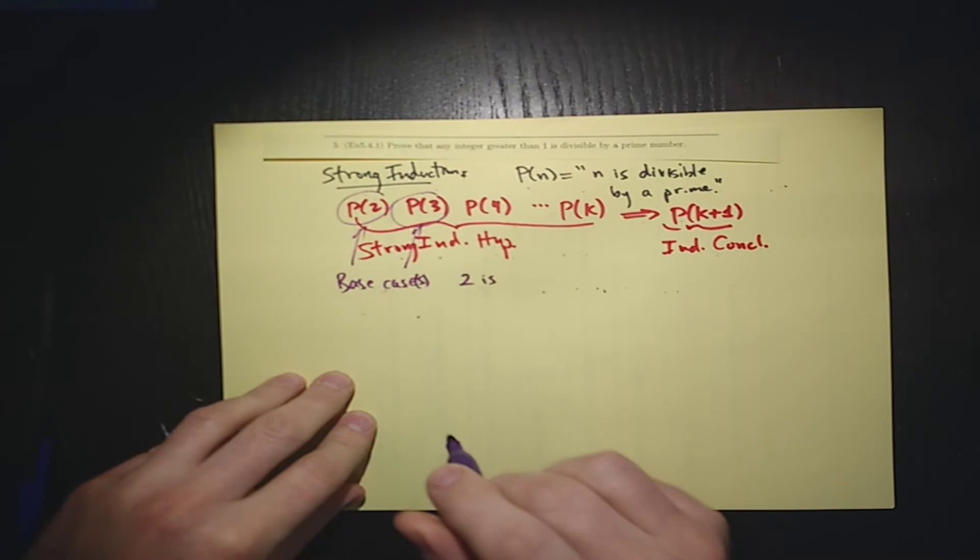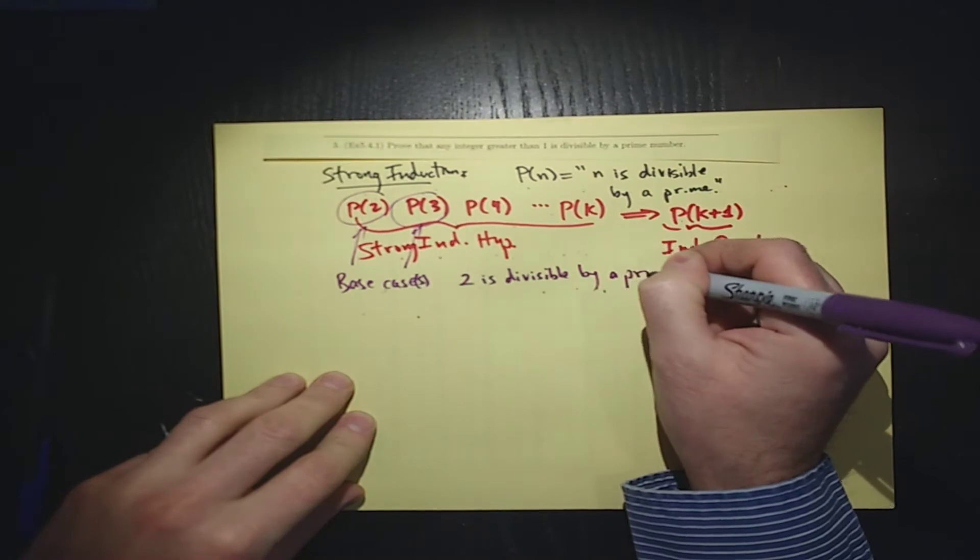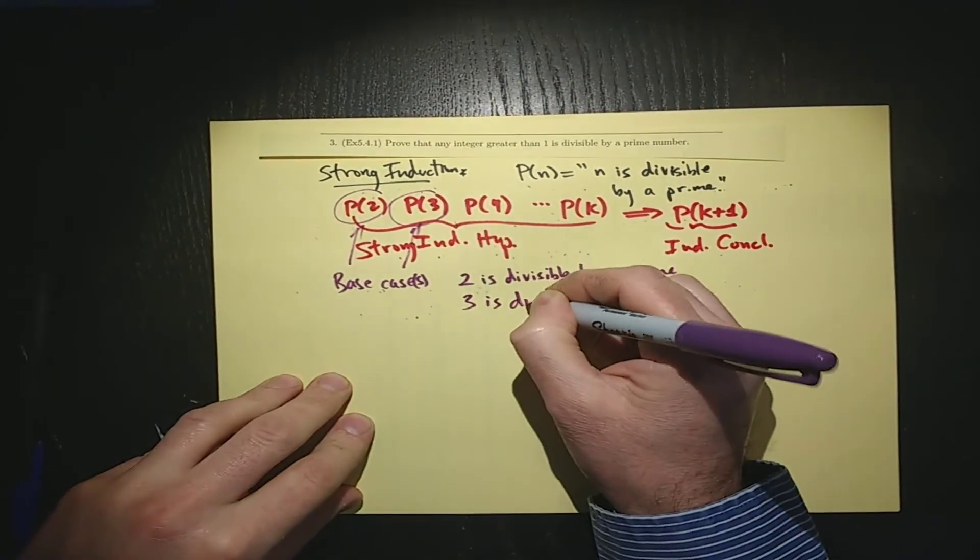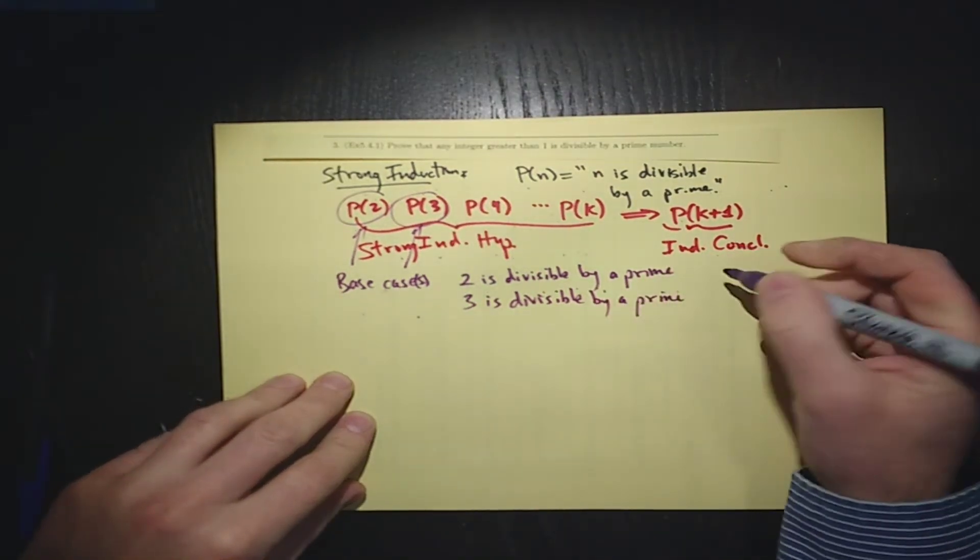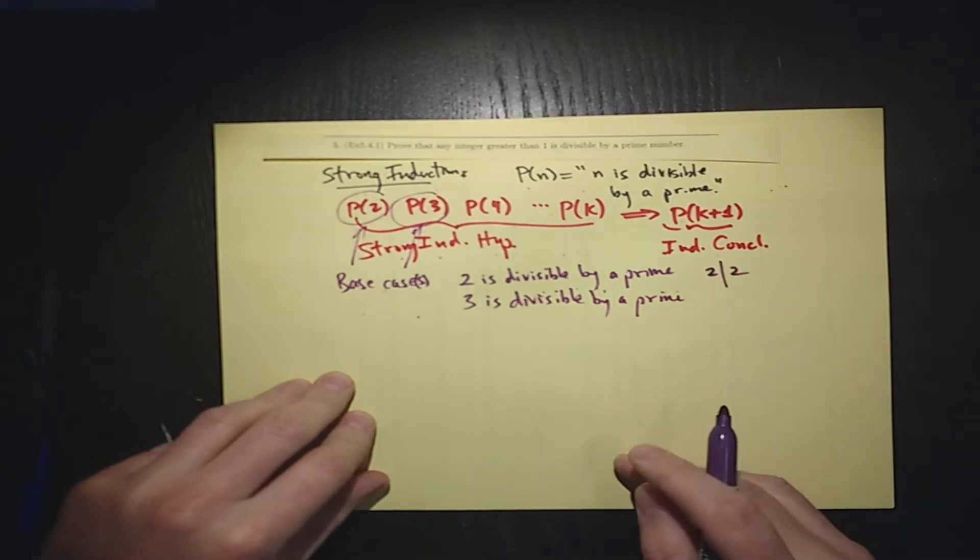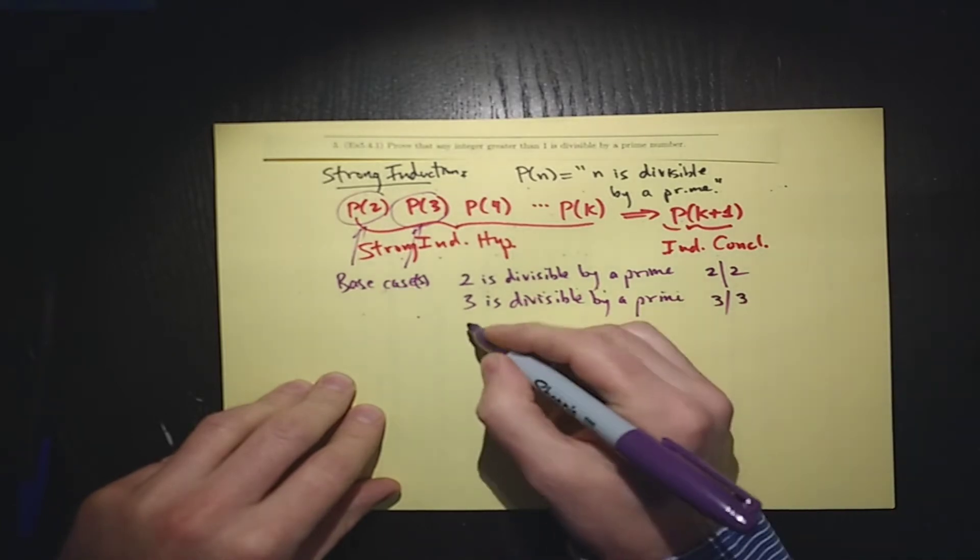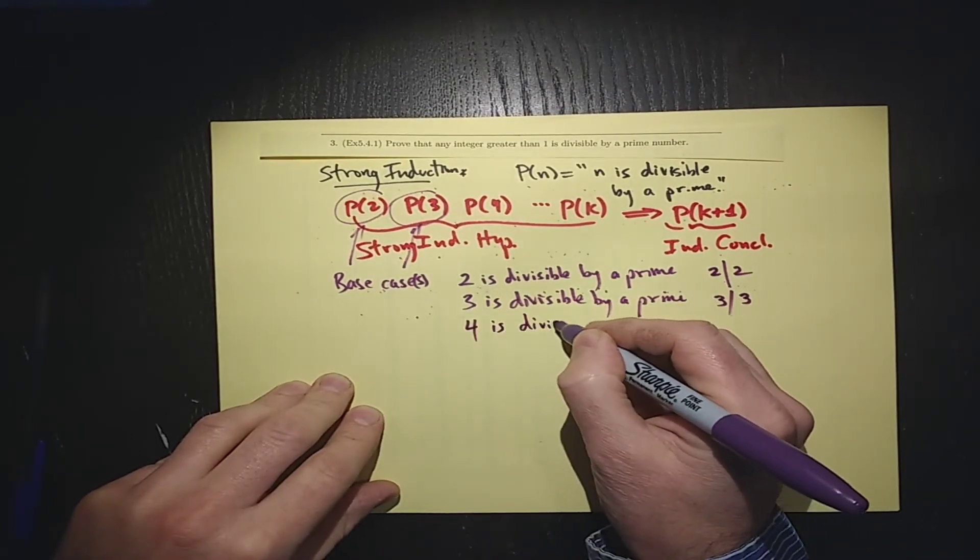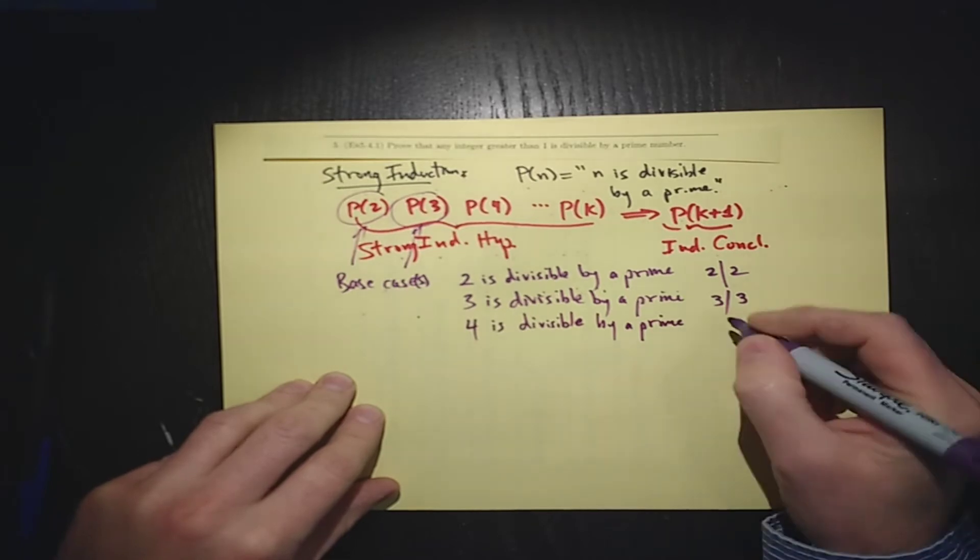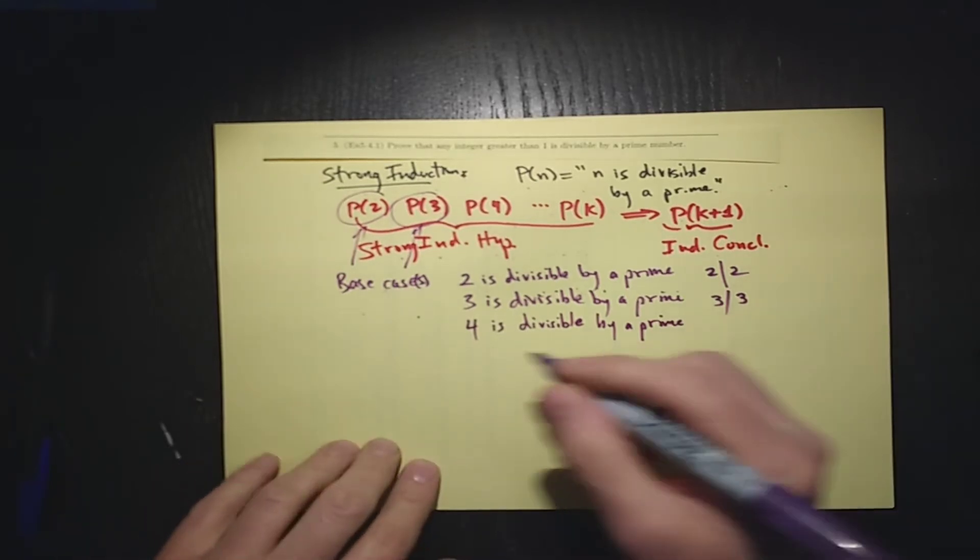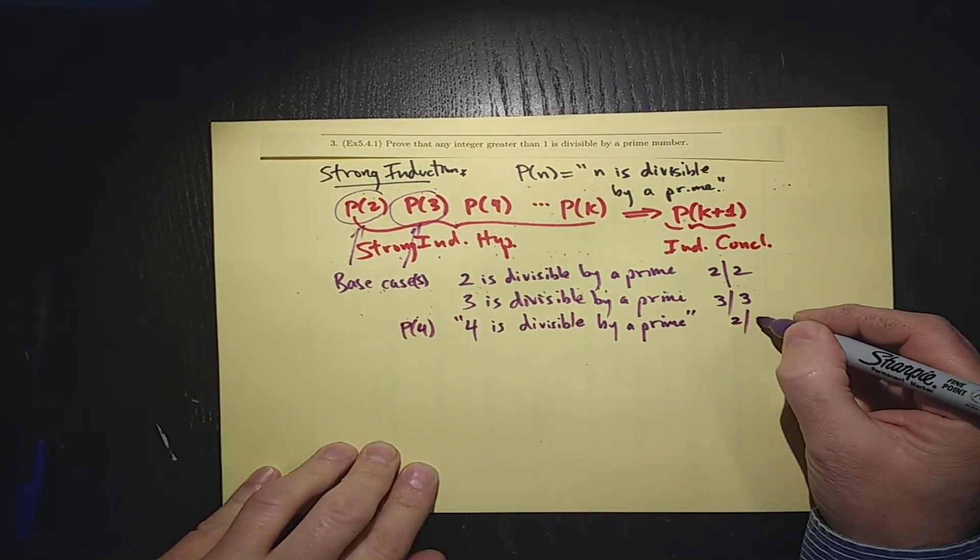Well, 2 is divisible by a prime, and 3 is divisible by a prime. Well, 2 is a prime, so 2 is divisible by 2. And 3 is a prime, so 3 is divisible by 3. We could even continue, you don't need to limit yourself to one base case, but most people do. But P(4) would say that 4 is divisible by a prime, and of course it is, because 4 is divisible by 2.